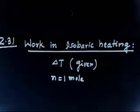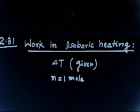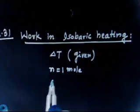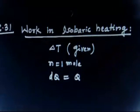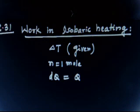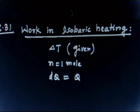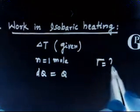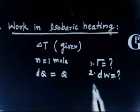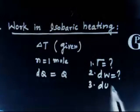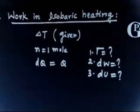One mole of a certain ideal gas obtains an amount of heat Q. So delta Q is given to you — delta Q equals Q — and heat is obtained by the gas, so this is a plus sign. Find the work performed by the gas, the increment in internal energy, and the value of gamma. So there are three things that you have to find.